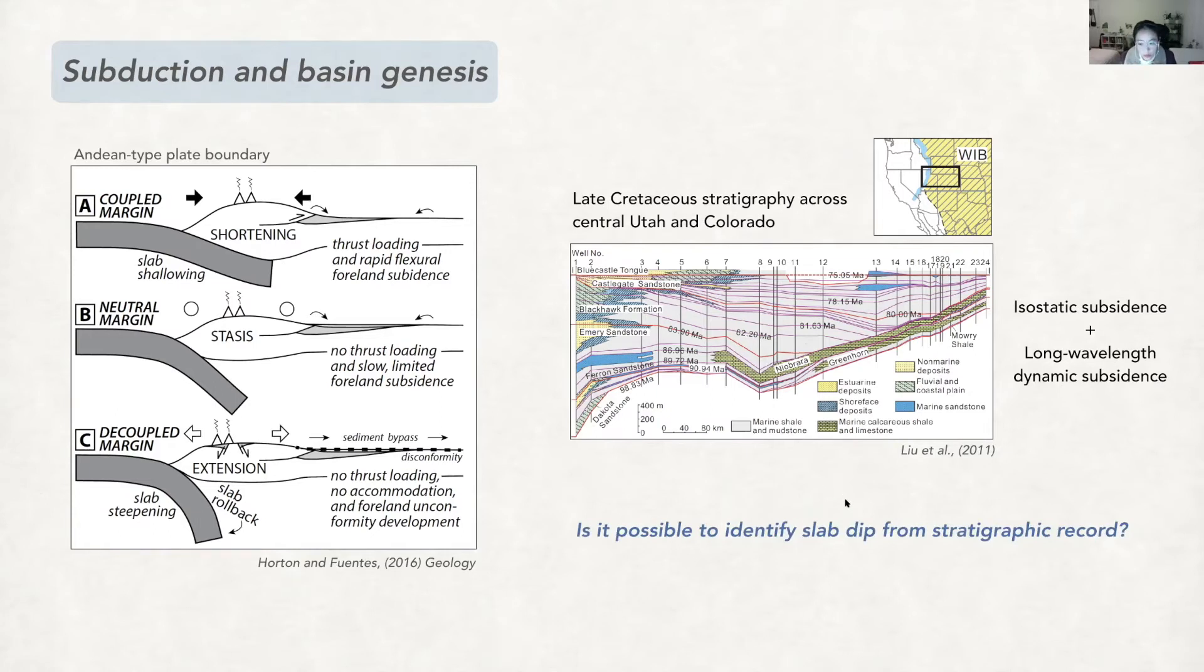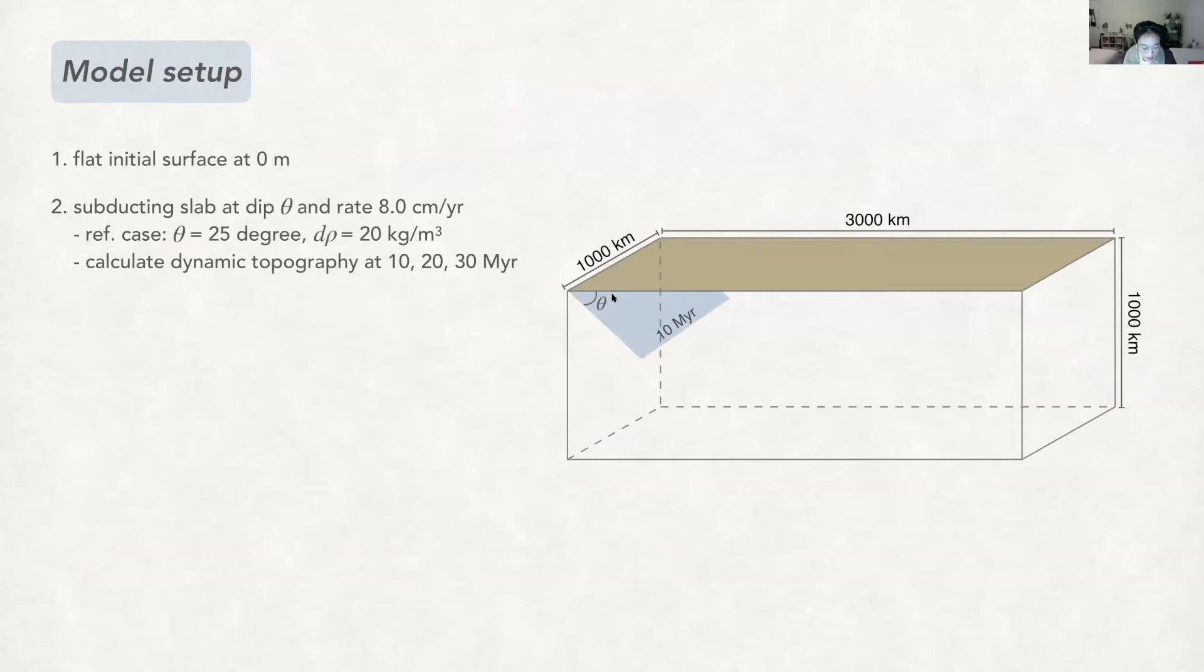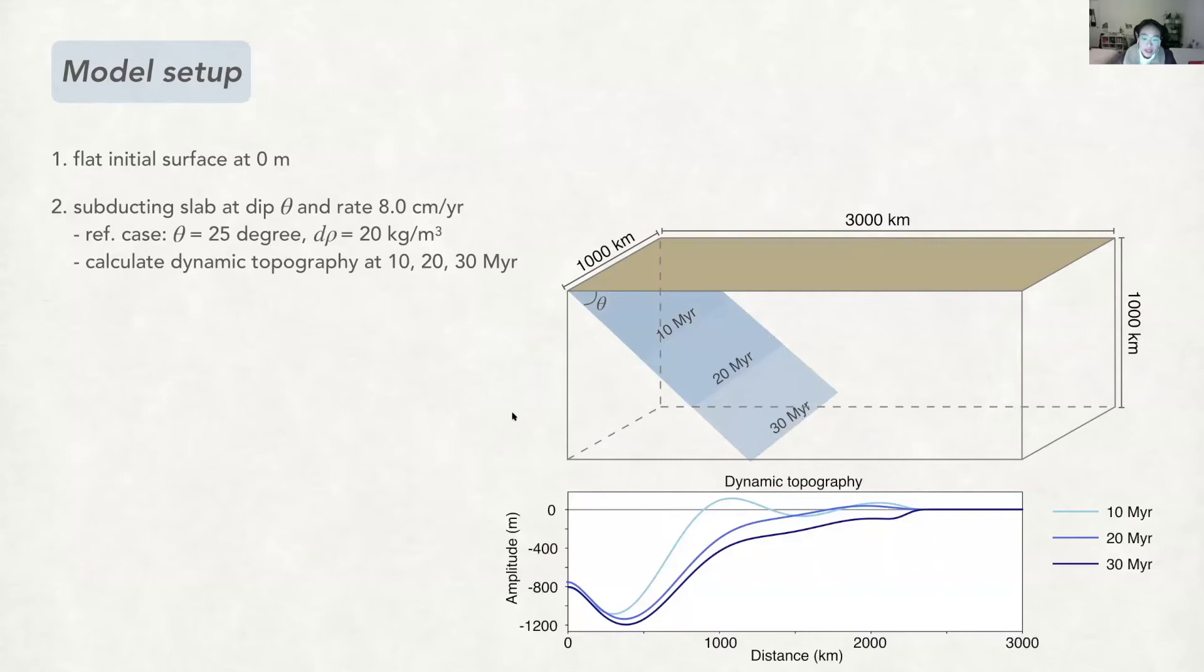To do that, we set up a model and it starts with a flat surface, and then we impose a subducting slab with a dip angle theta and then let it subduct for 30 million years. And then we calculate the dynamic topography at the surface. We can see that it has faster subsidence at the initiation stage of the subduction. And then with the descending of the slab, the major subsidence also migrated further away from the subduction zone.